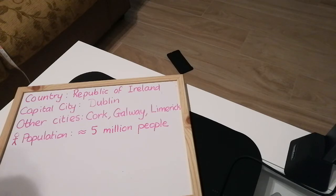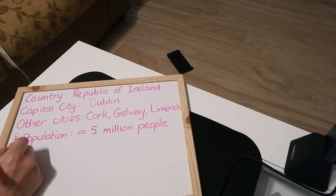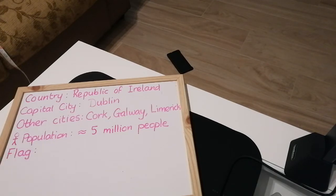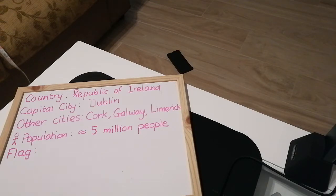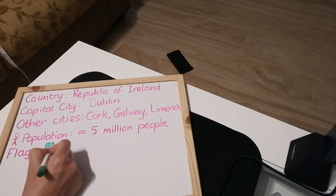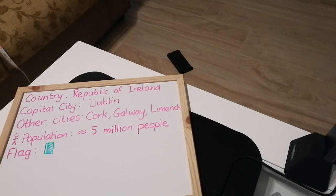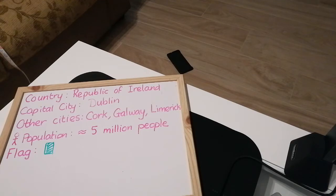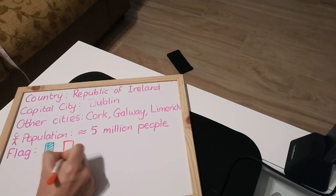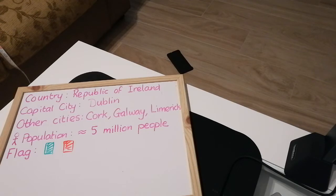I could include a picture of the flag. I only have a pink marker here — I have some more markers. The Irish flag is green, white, and orange. This looks a bit like red, looks Italian, but it's all I have — it's supposed to be orange. I can draw a picture of the flag.